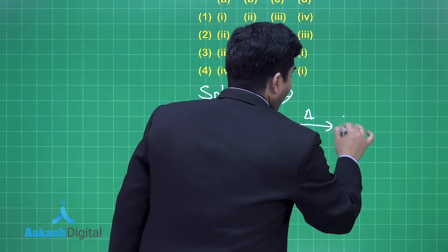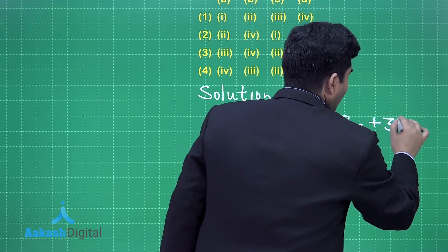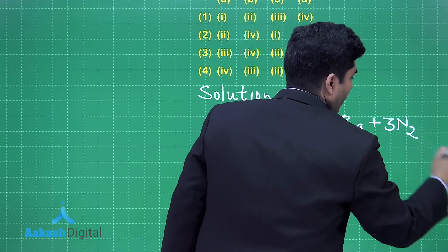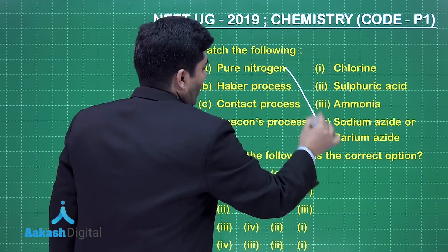So we can match this column - A is matched with 4.